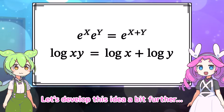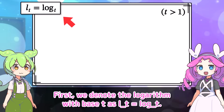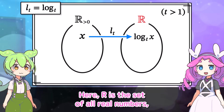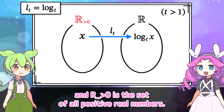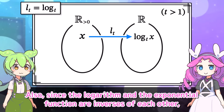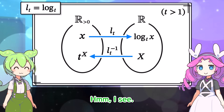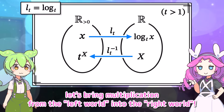Let's develop this idea further. We denote the logarithm with base t as L_t, equal to log base t. In that case, x is mapped to log base t of x by L_t. Here, ℝ is the set of all real numbers, and ℝ_{>0} is the set of all positive real numbers. Since the logarithm and the exponential function are inverses of each other, the inverse function of L_t, written L_t inverse, maps x to t to the power of x. Using this mapping, let's bring multiplication from the left world into the right world.